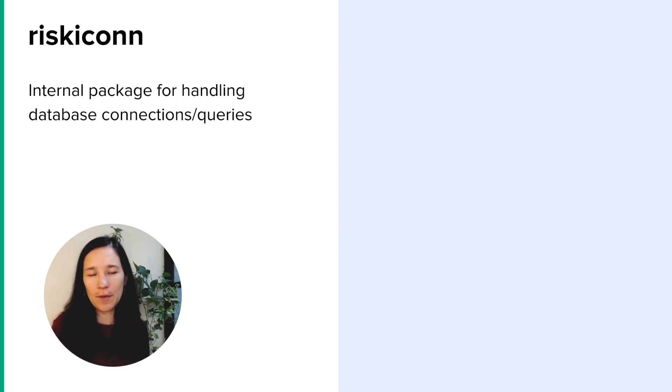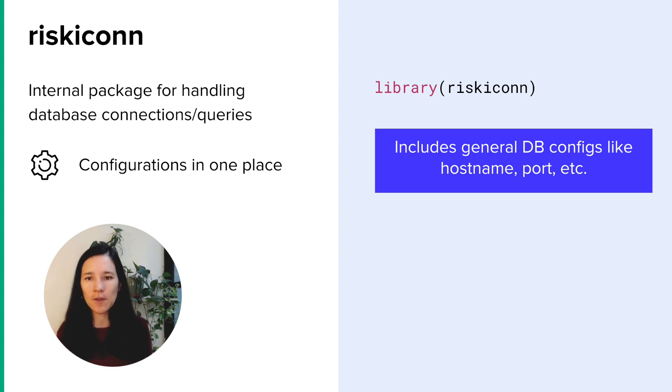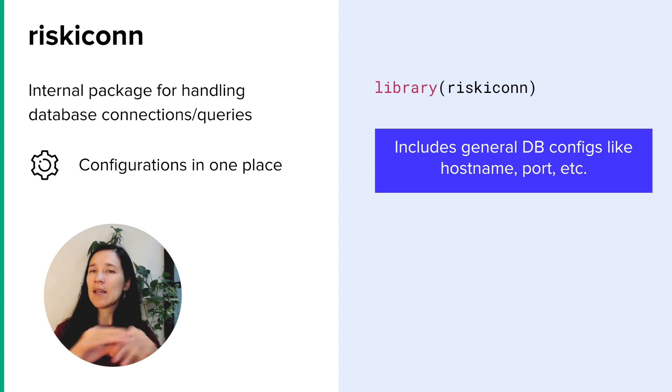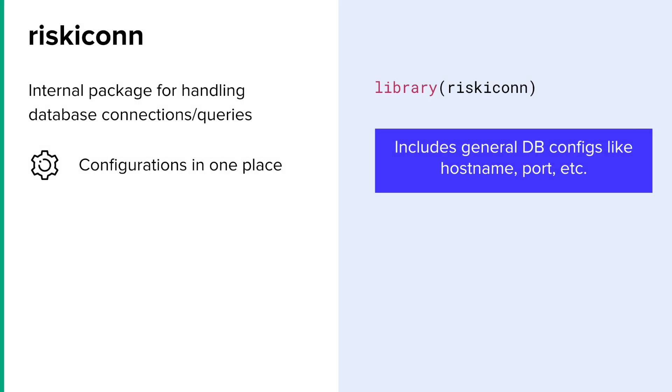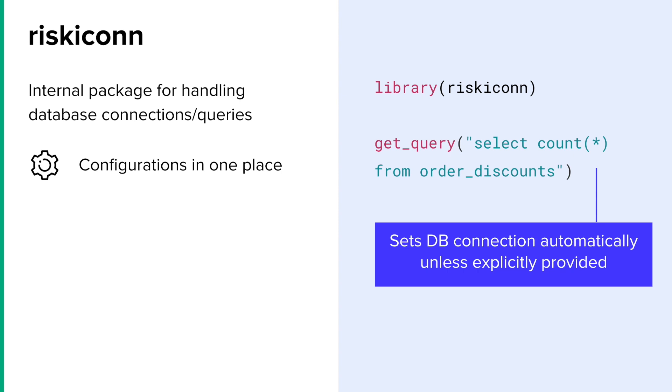Because we're using R and SQL so much at Riskified, we actually have a dedicated package to handle those database connections and also add little helpers for our day-to-day flow. For example, we keep all our configurations within this package — anything that's not too sensitive, like a hostname, port, et cetera — we just stick into the package. If we need to update it, we just update it in that one place, and as long as people reinstall the package, it gets updated across all computers. The other thing is that we basically just use one database among the analytical teams, so unless you explicitly provide a database connection, we assume we know what you want — and that's built into our own get_query function.